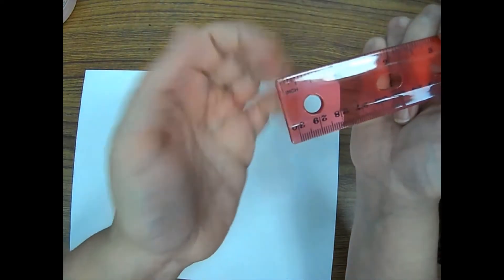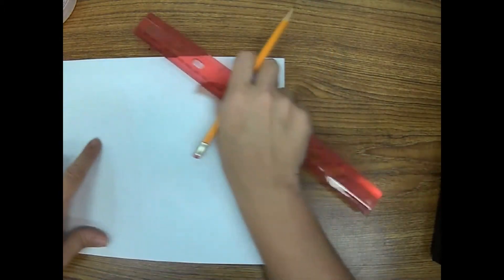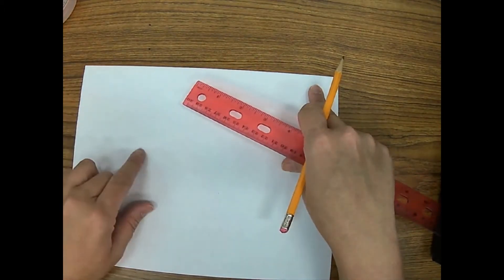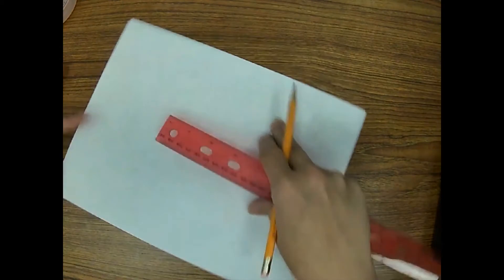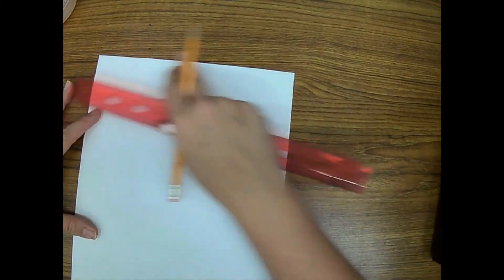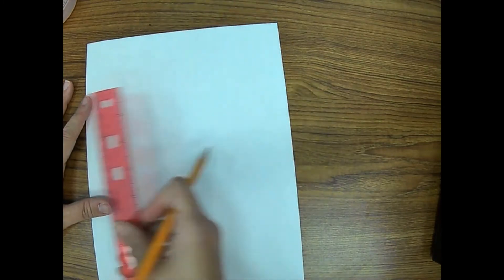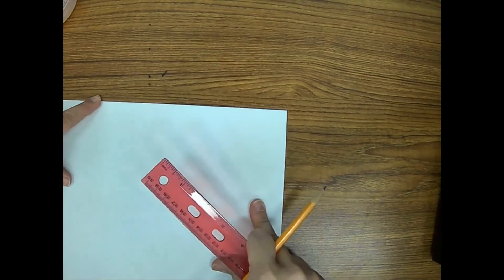So what we're going to be doing is we're going to be breaking this paper up into 11 boxes going this direction and eight boxes going this direction. You're going to have eight across the shorter edge and 11 across the bigger edge.